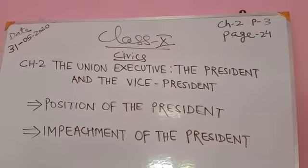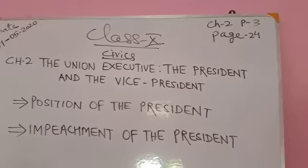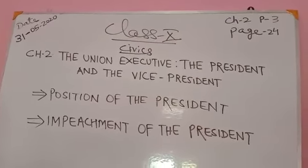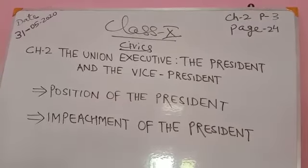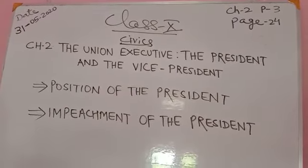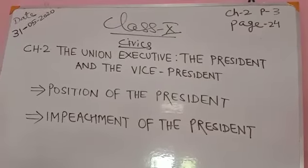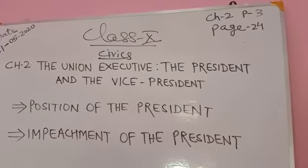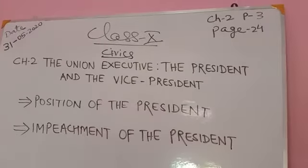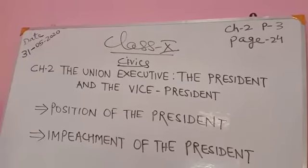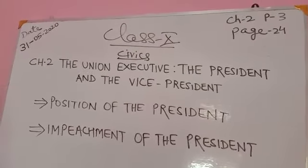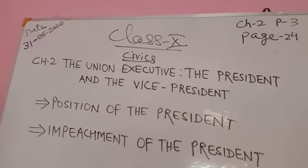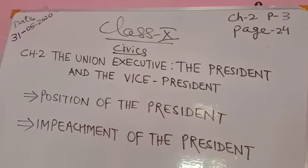Article 74 was amended according to the 44th Amendment Act of 1978, which says there shall be a council of ministers with the prime minister as its head to aid and advise the president. The president shall act in accordance with such advice, though the president may require the council of ministers to reconsider such advice. However, the president is not a mere rubber stamp.